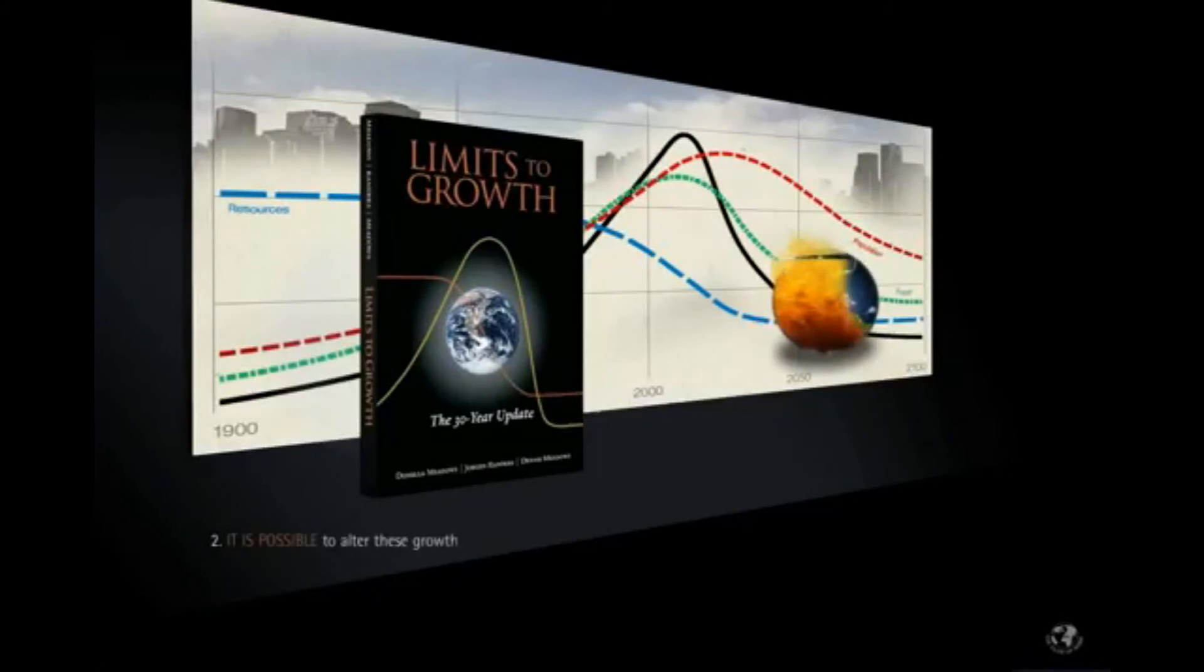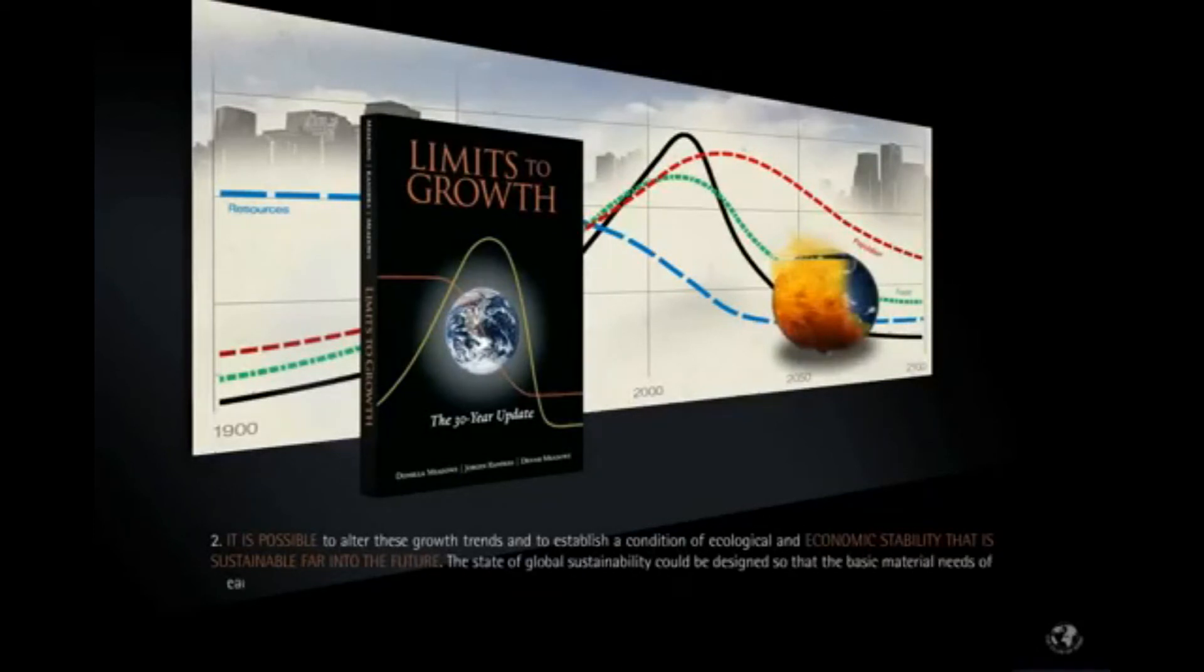Second: It is possible to alter these growth trends, and to establish a condition of ecological and economic stability that is sustainable far into the future. The state of global sustainability could be designed so that the basic material needs of each person on earth are satisfied, and each person has an equal opportunity to realize his individual human potential.